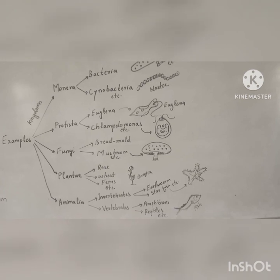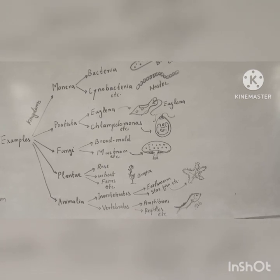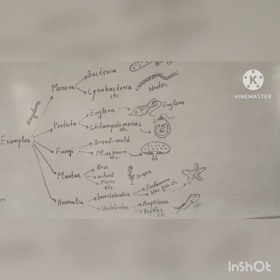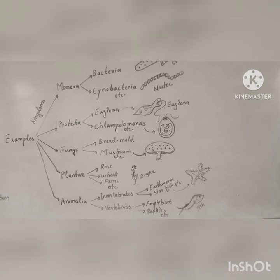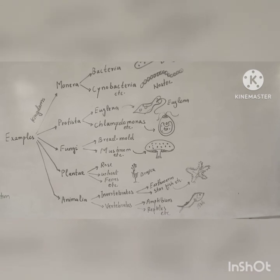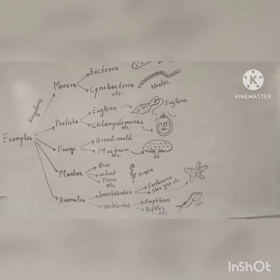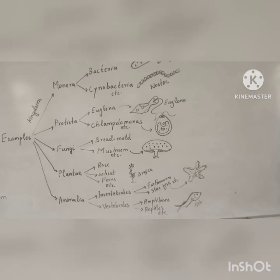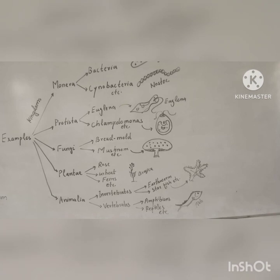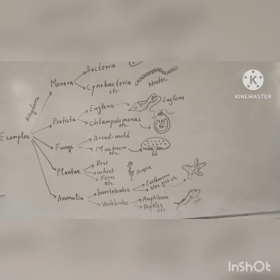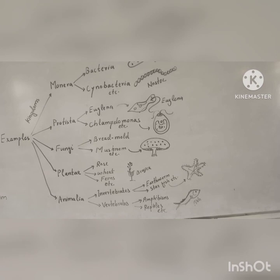Kingdom Plantae is a diverse group including rose, wheat, ferns, banana, mango, and apples. Kingdom Animalia includes both vertebrates and invertebrates. Invertebrates include earthworms and starfish, while vertebrates include amphibians, reptiles, birds, and mammals.